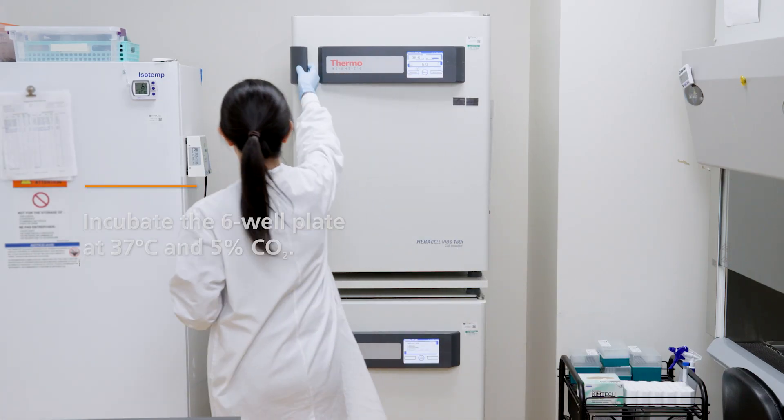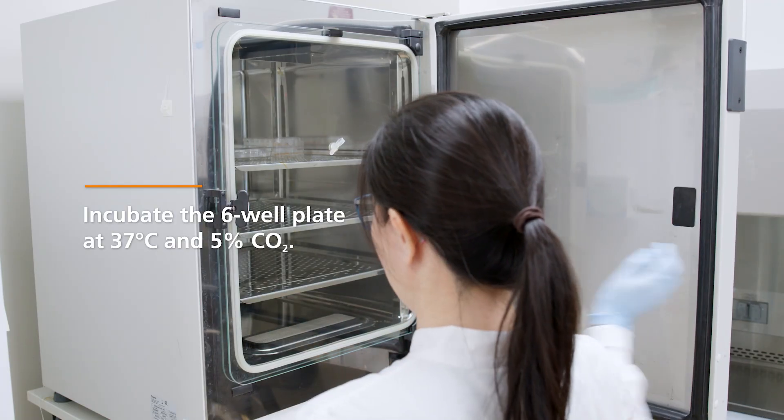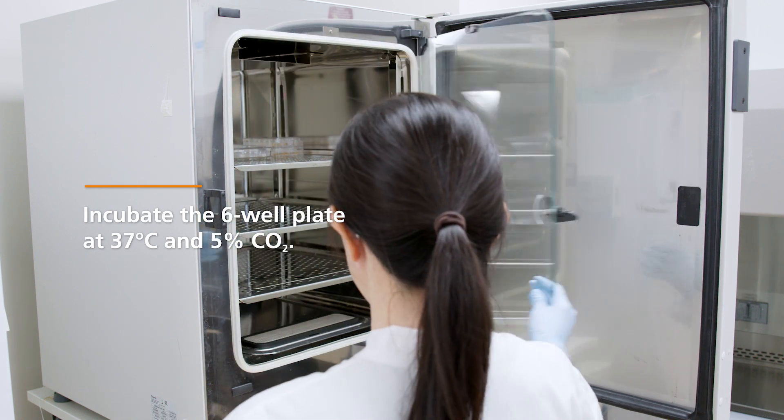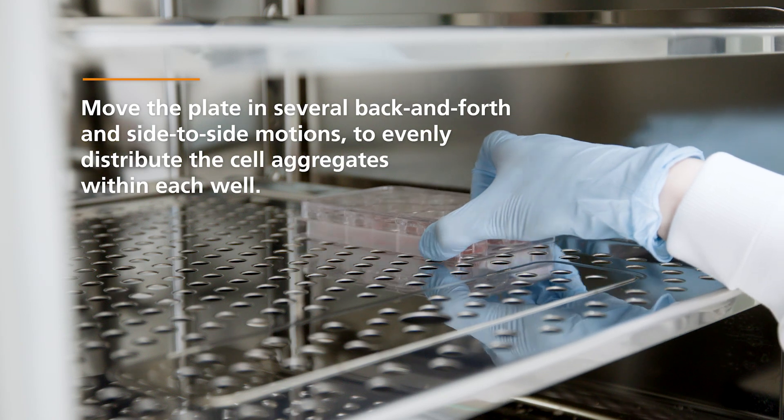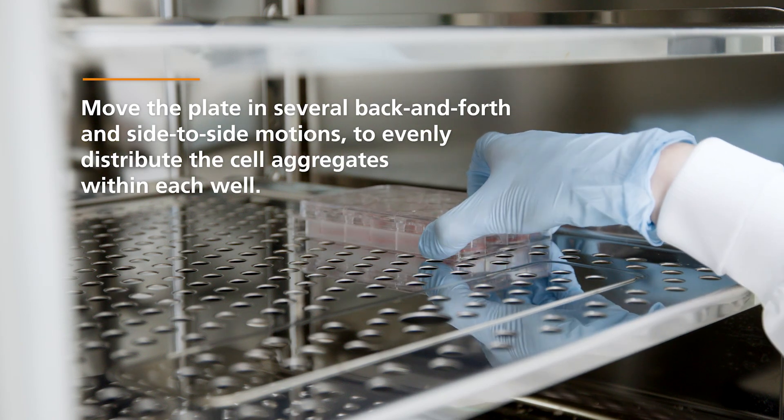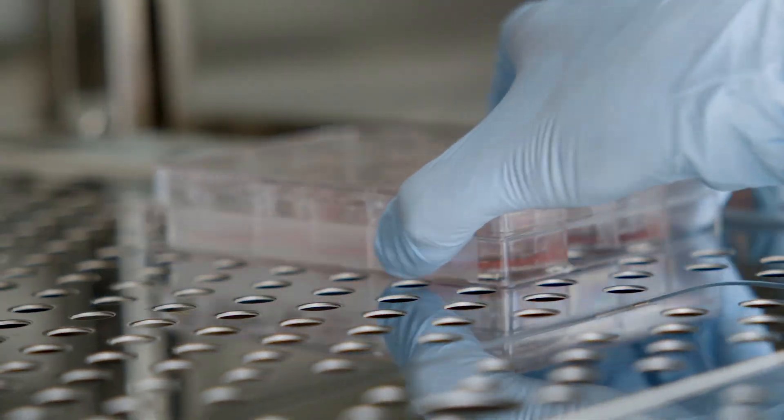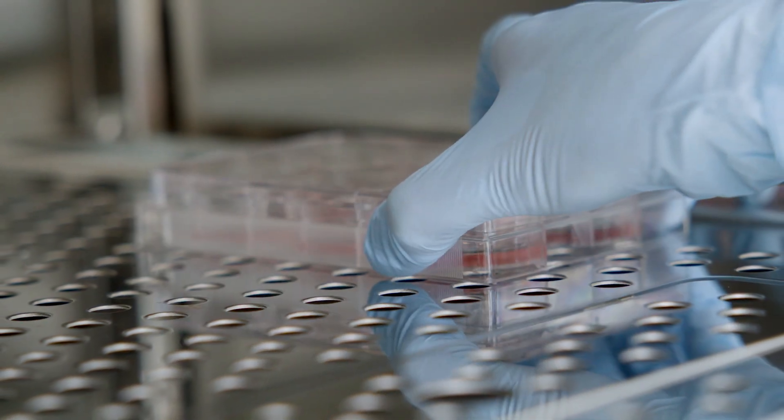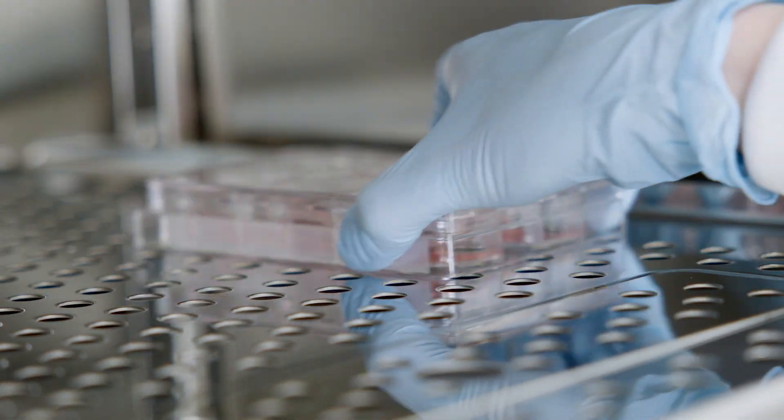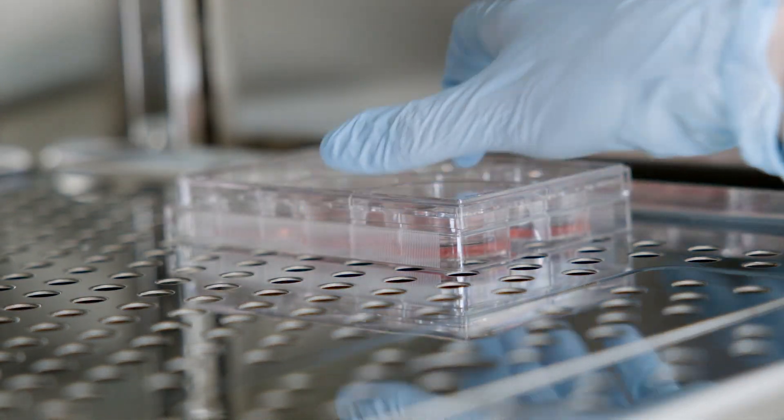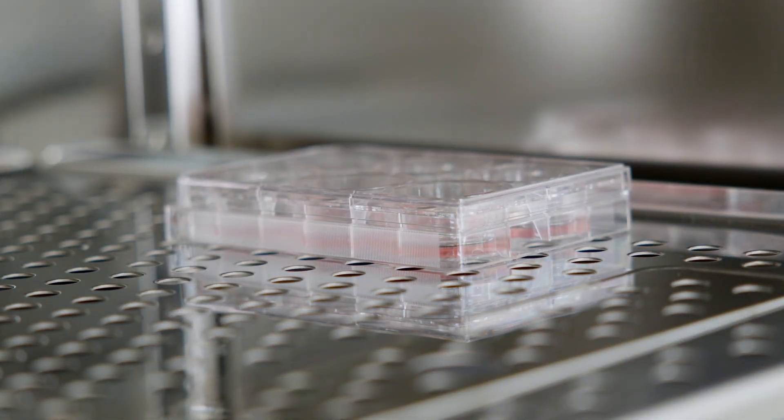Place the plates in an incubator at 37 degrees Celsius and 5% CO2. Move the plate in several quick, short back-and-forth and side-to-side motions to evenly distribute the cell aggregates within each well. Note that uneven distribution of cell aggregates may result in increased differentiation of human iPSCs, so it's important to move the plate sufficiently in quick motions.